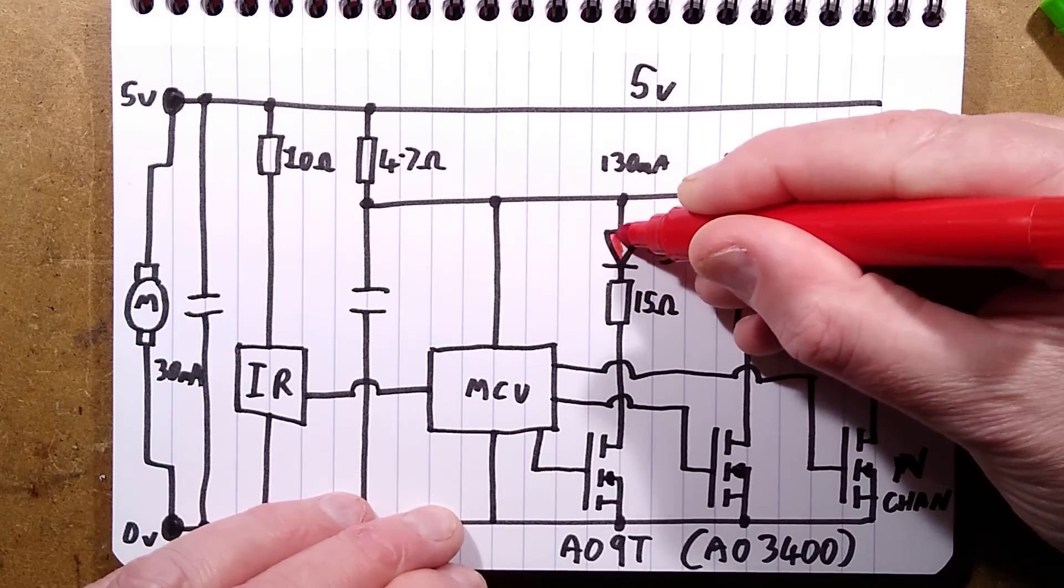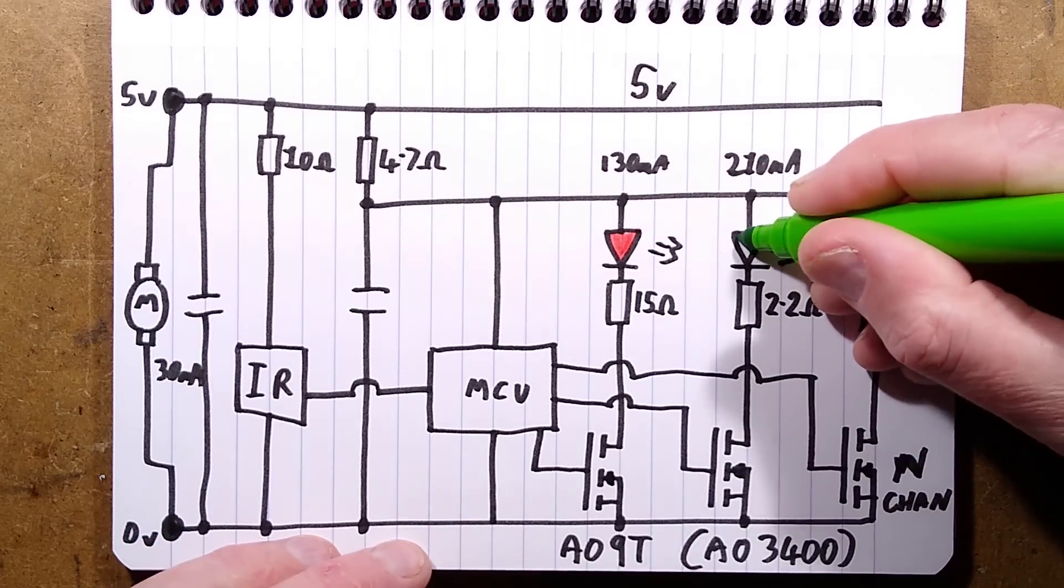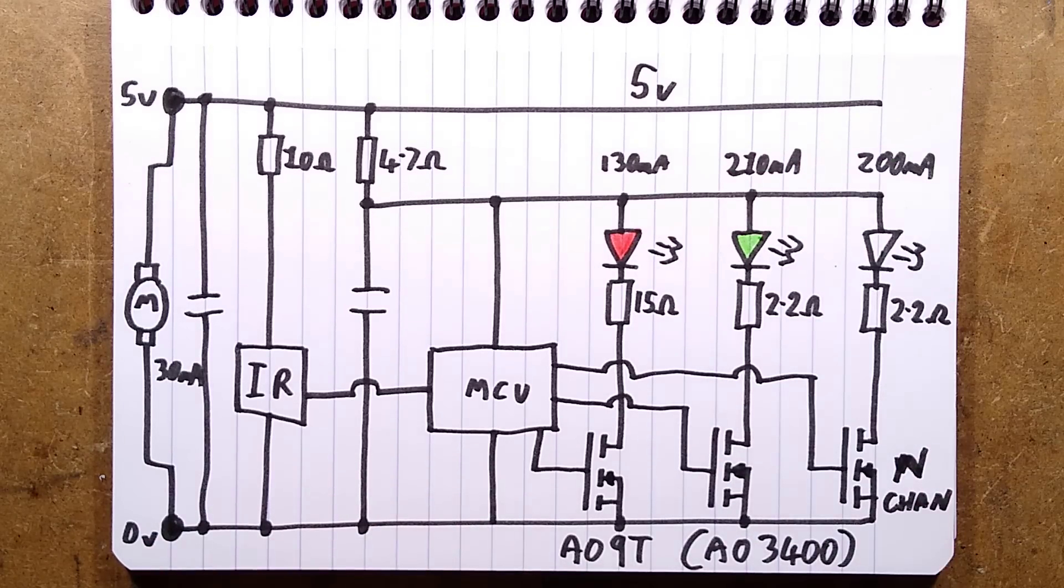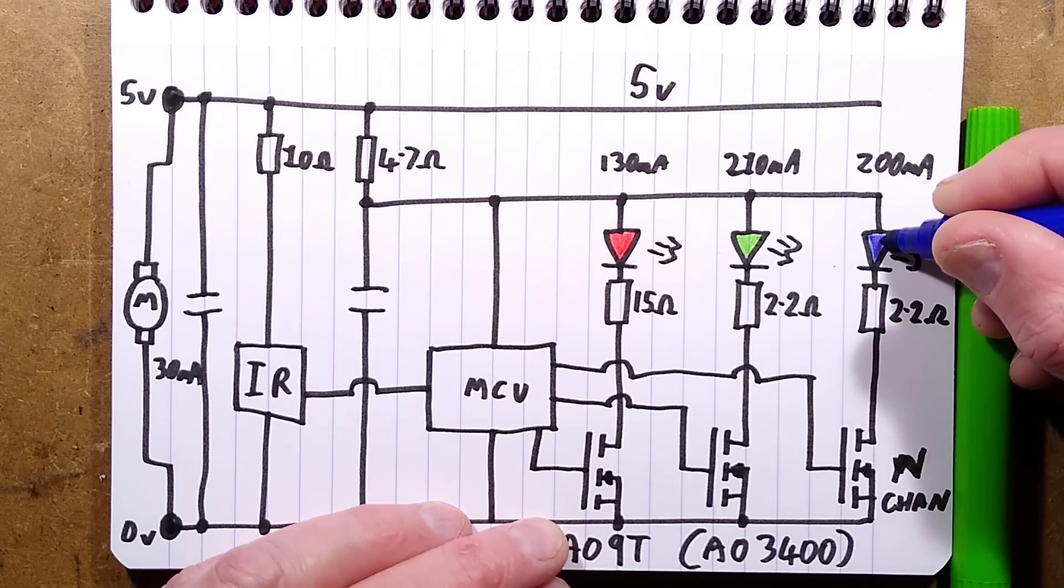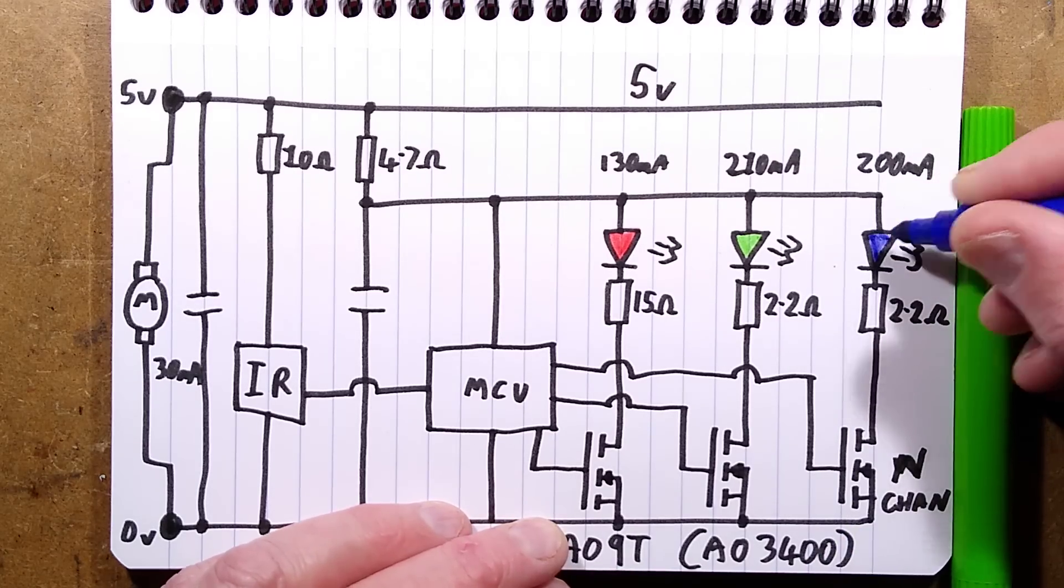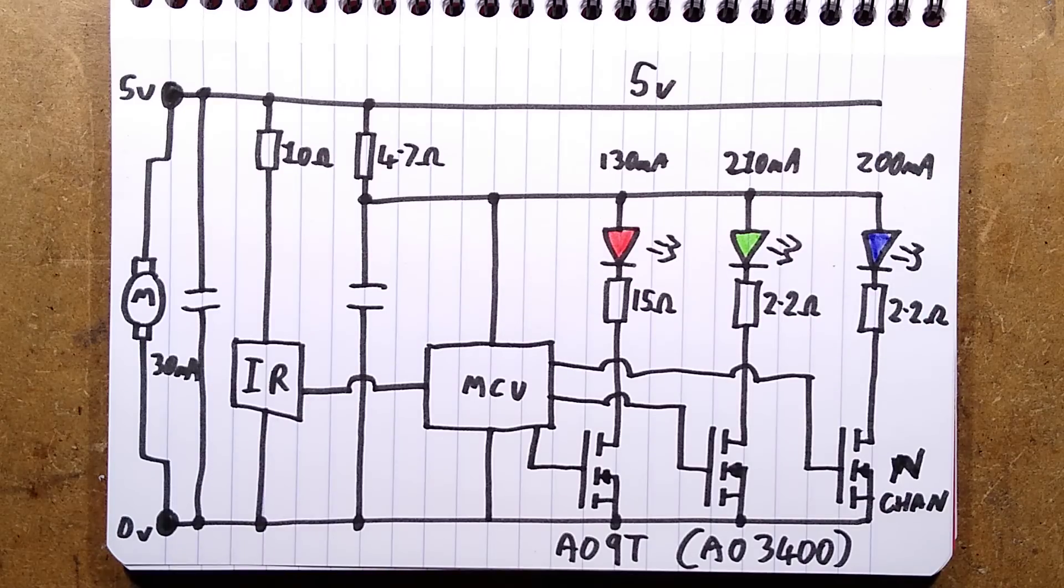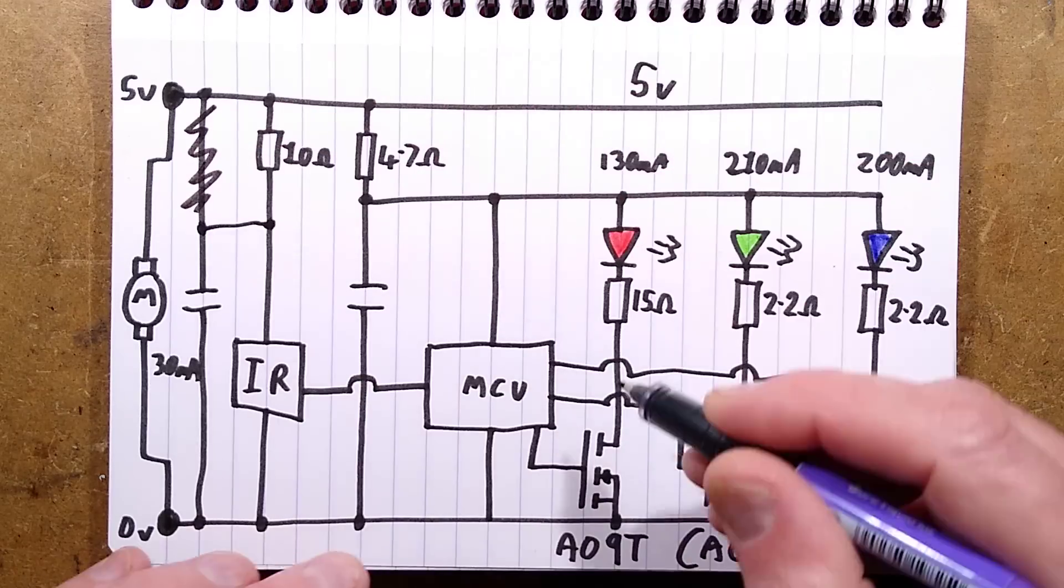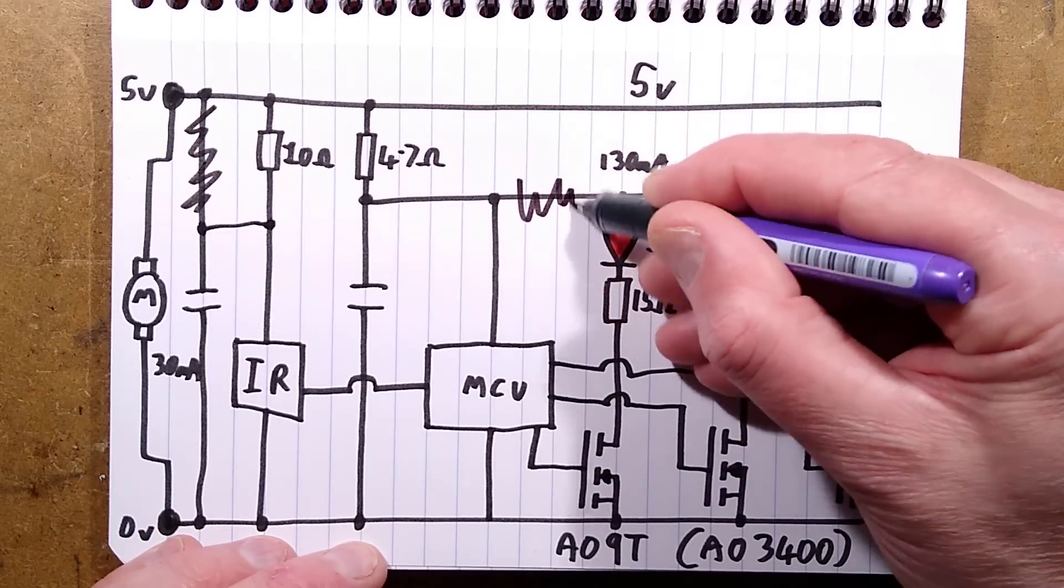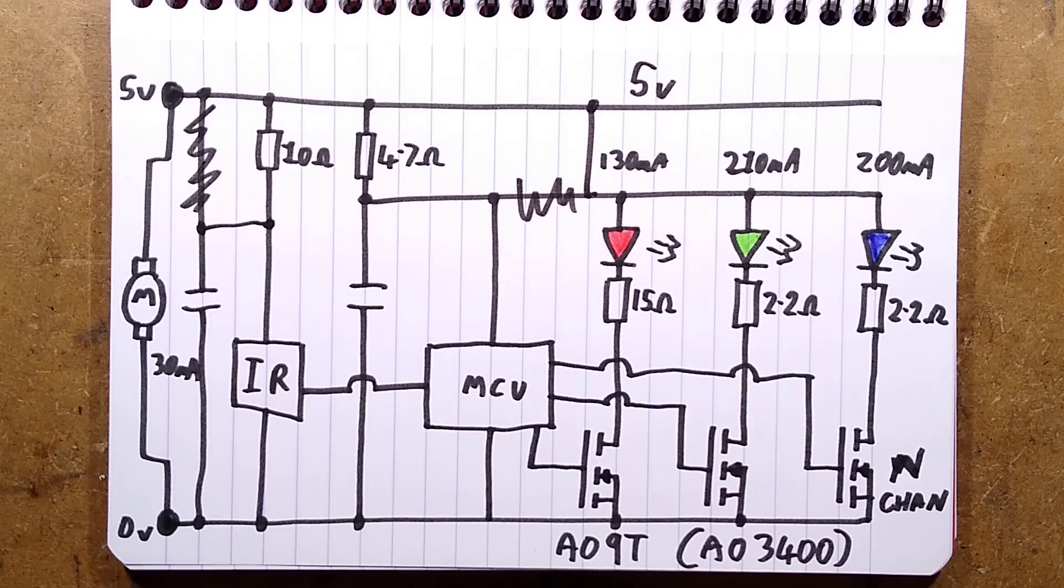And there's the LEDs with their resistors. I didn't even color that in, the LEDs, that would have been nice if I'd colored in the LEDs. Hold on, let's color in the LEDs. Red, this will just make it look nicer. Green, and blue. There we go, that's what it needed, just that little finishing touch.